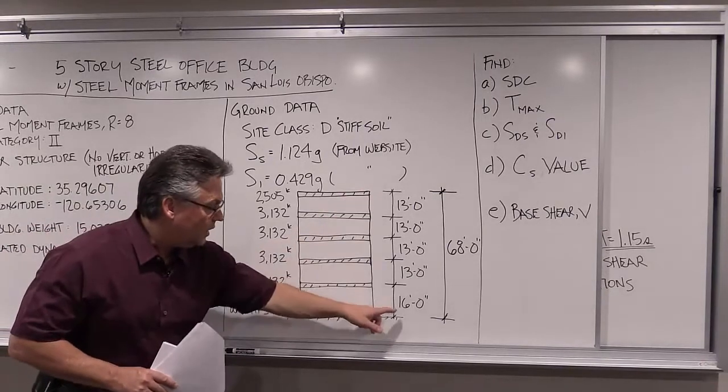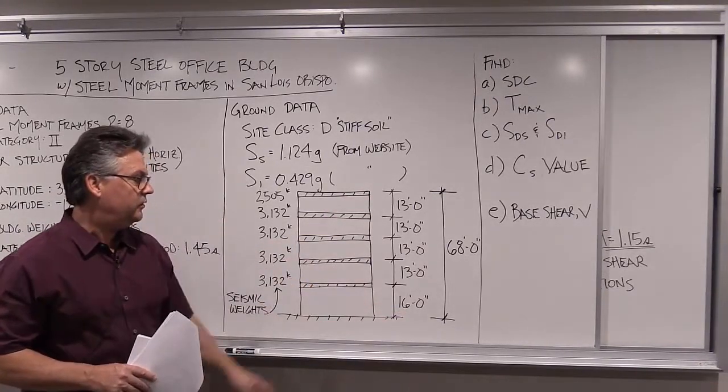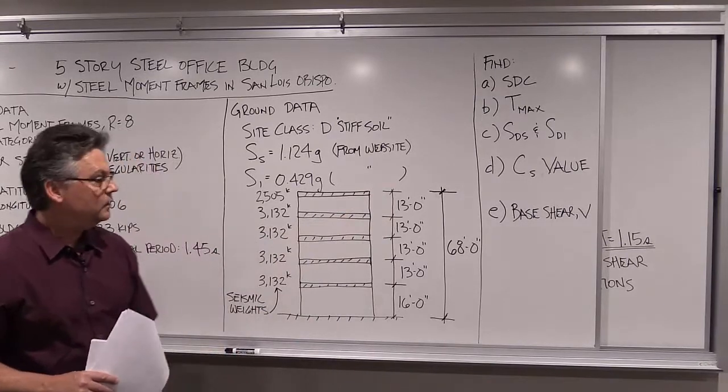At this site the S_SS short-period factor is 1.124g and S1, the one-second factor, is 0.429g. For the building weights: we have a slightly lighter roof of 2,505 kips and all the floors are 3,132 kips. The first floor height is 16 feet and all remaining floor heights are 13 feet — fairly round and realistic numbers for a steel office building. The total height of the building is 68 feet.